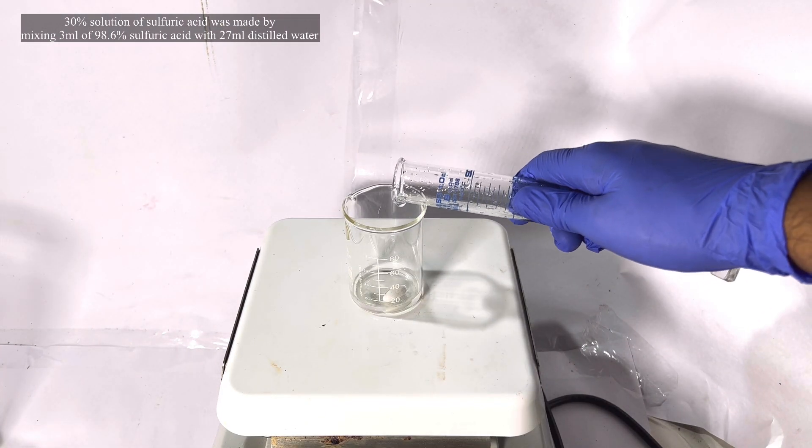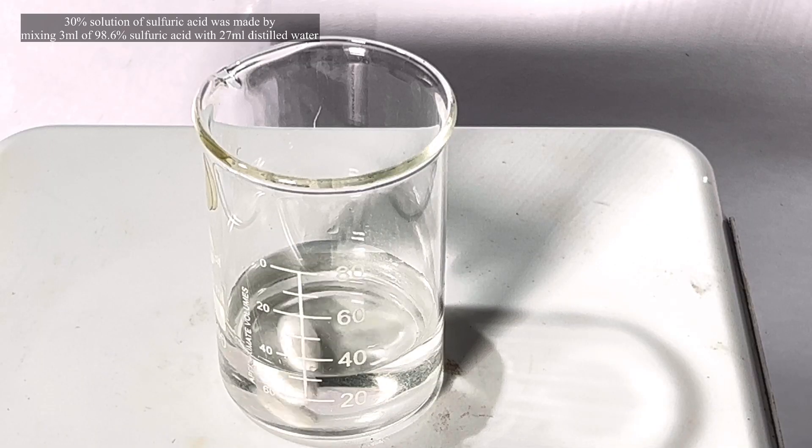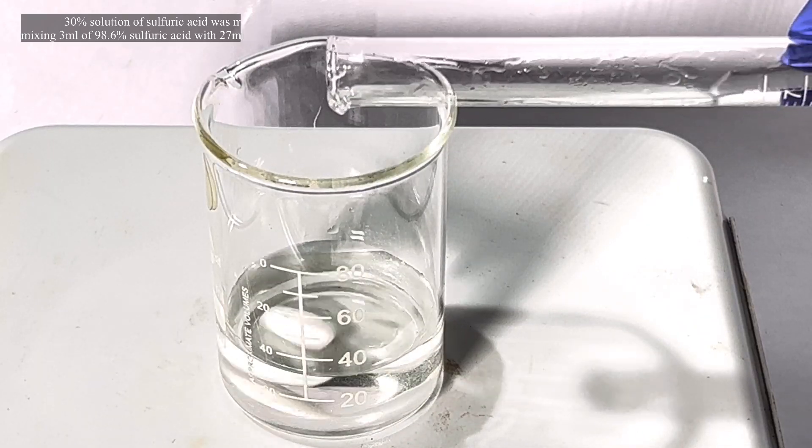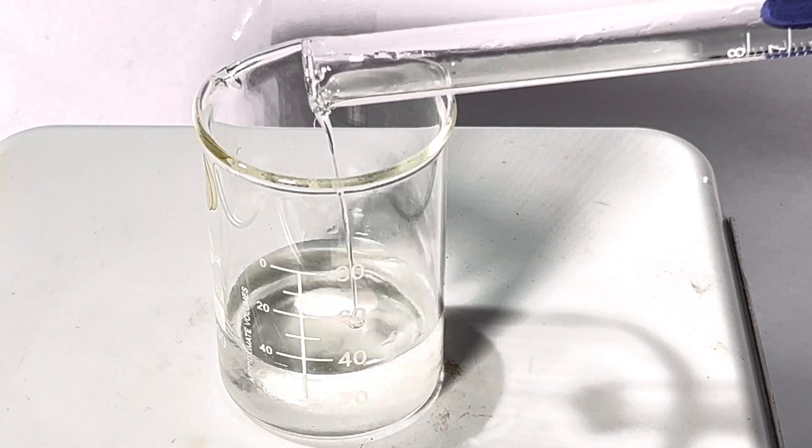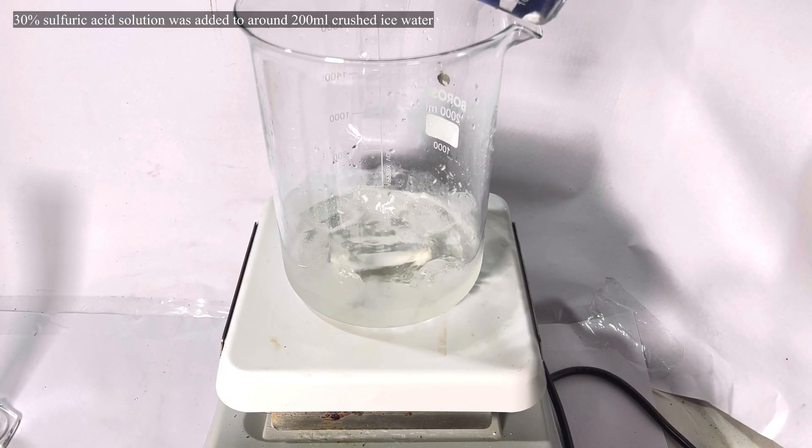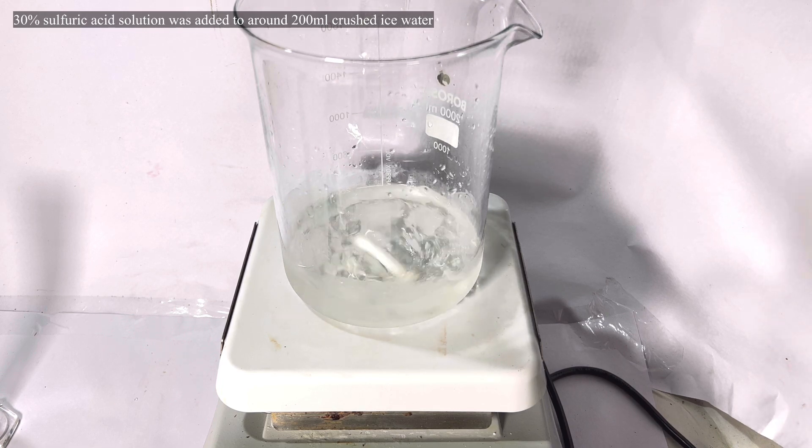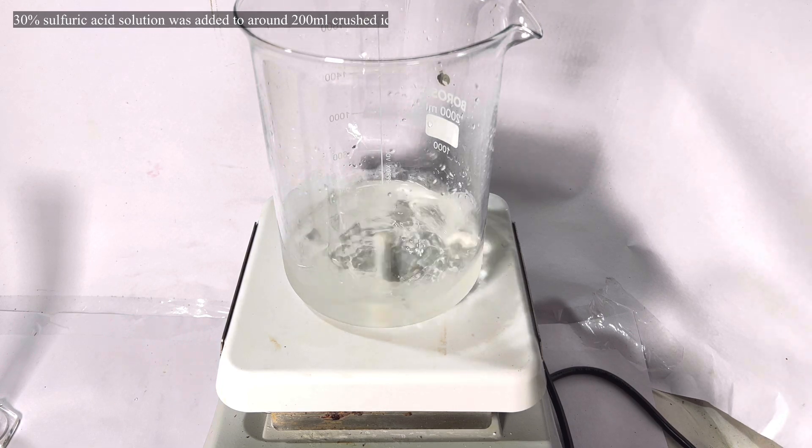30 ml of 10% sulfuric acid solution was prepared by dissolving 3 ml of concentrated 98.6% sulfuric acid in 27 ml of distilled water. Now a large 2000 ml beaker was taken which was filled with some crushed ice and water and the 30 ml of the 10% sulfuric acid.